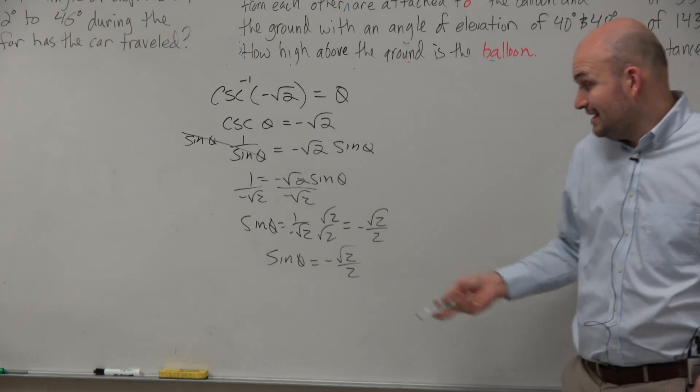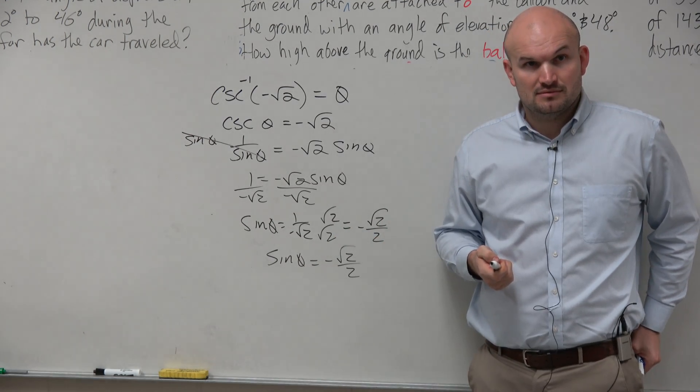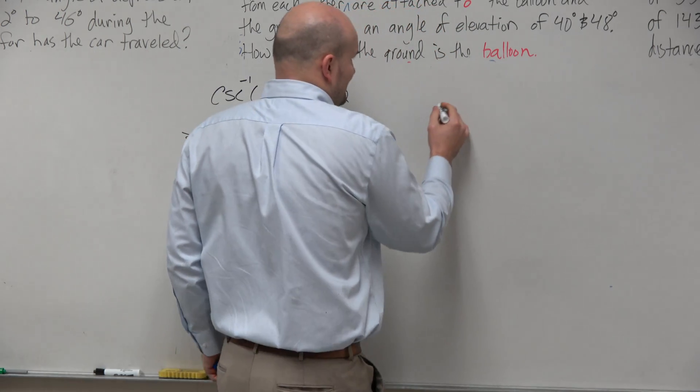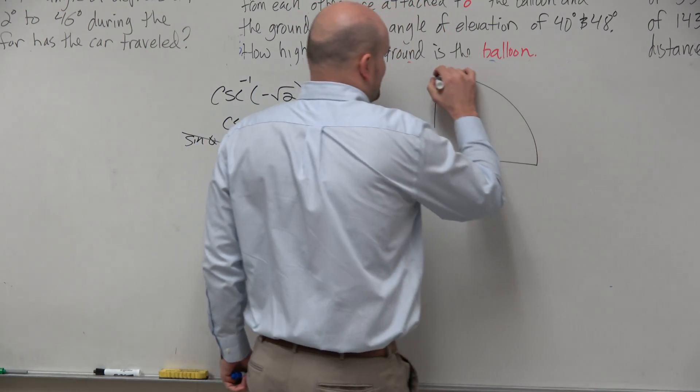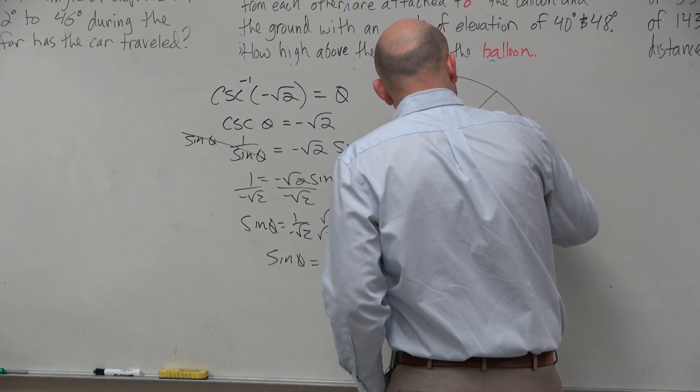And again, what we're asking is sine of what angle equals negative √2 over 2? So we've got to think, what angle do we know of that even gives us the sine of √2 over 2, which would be one angle, π over 4.